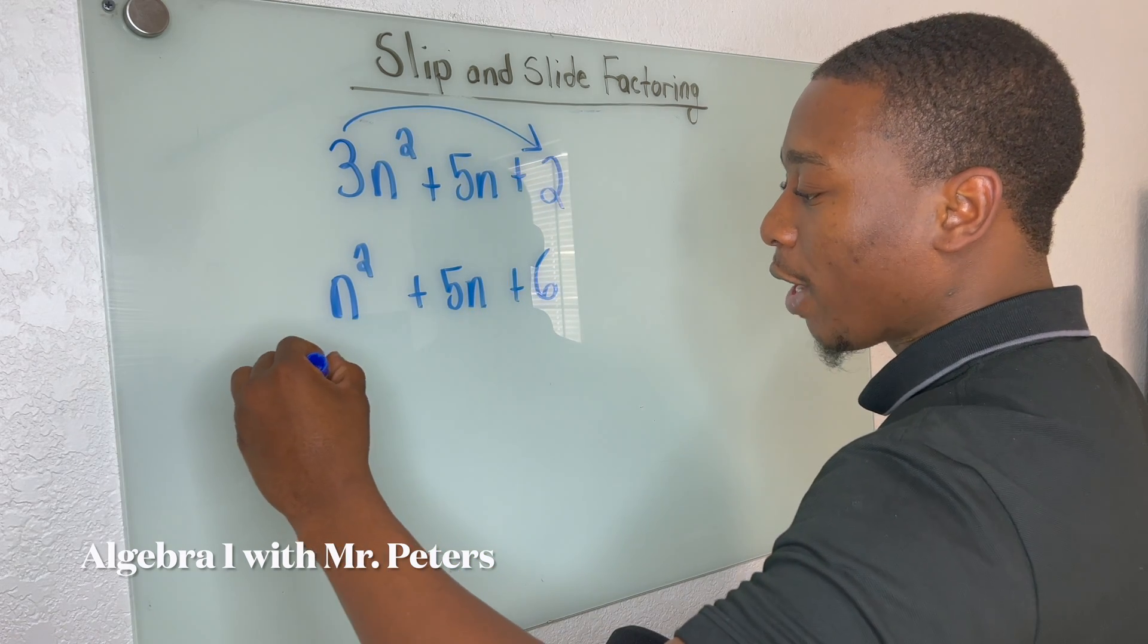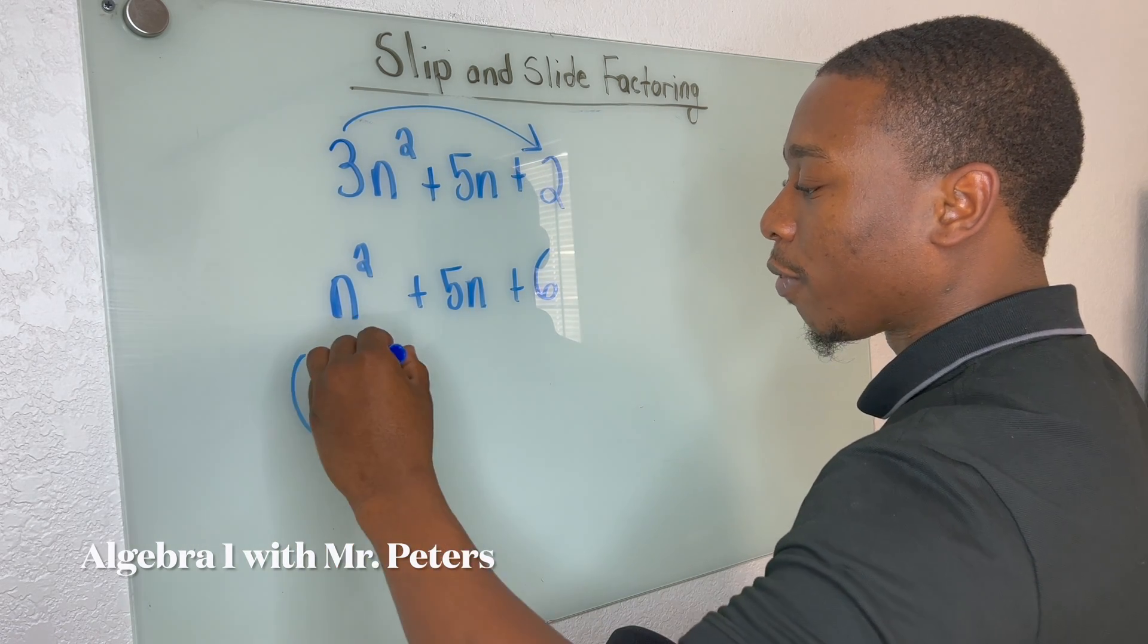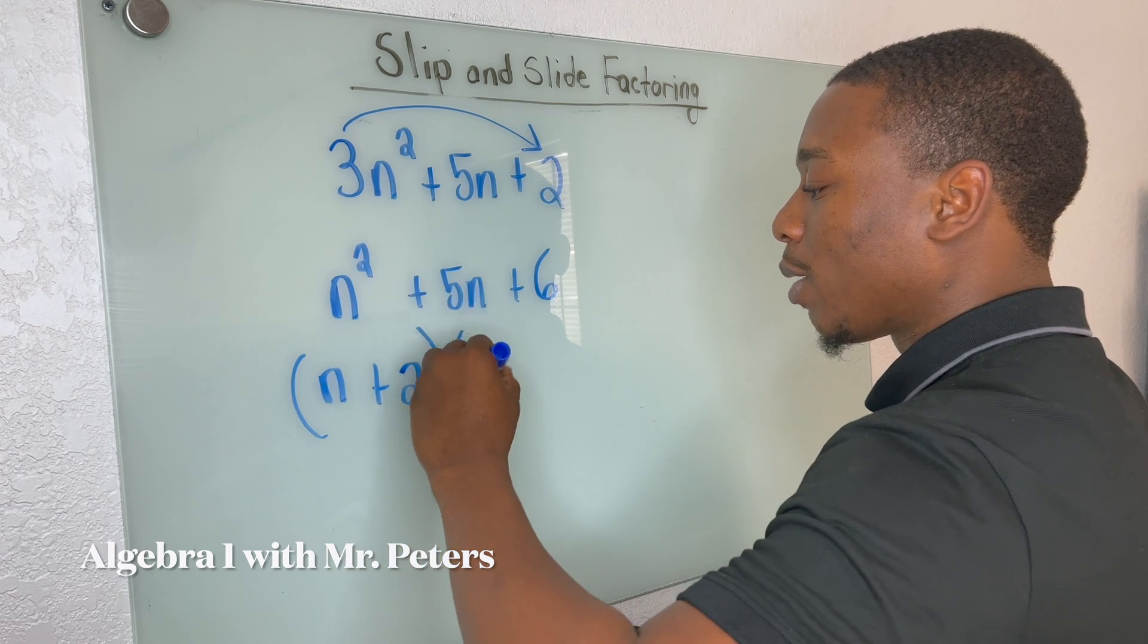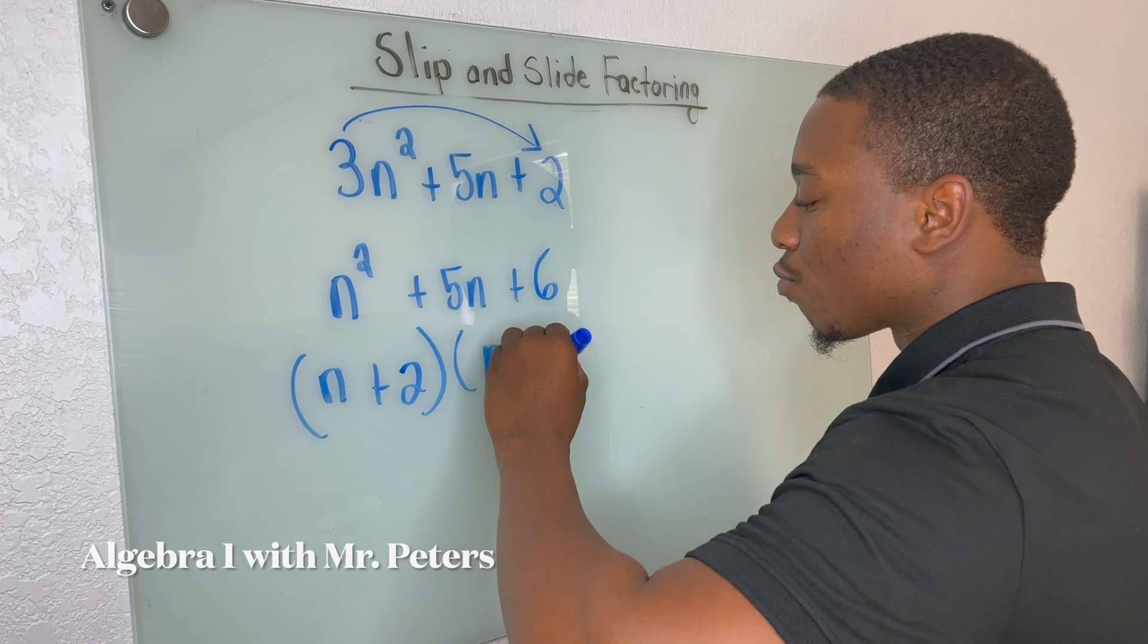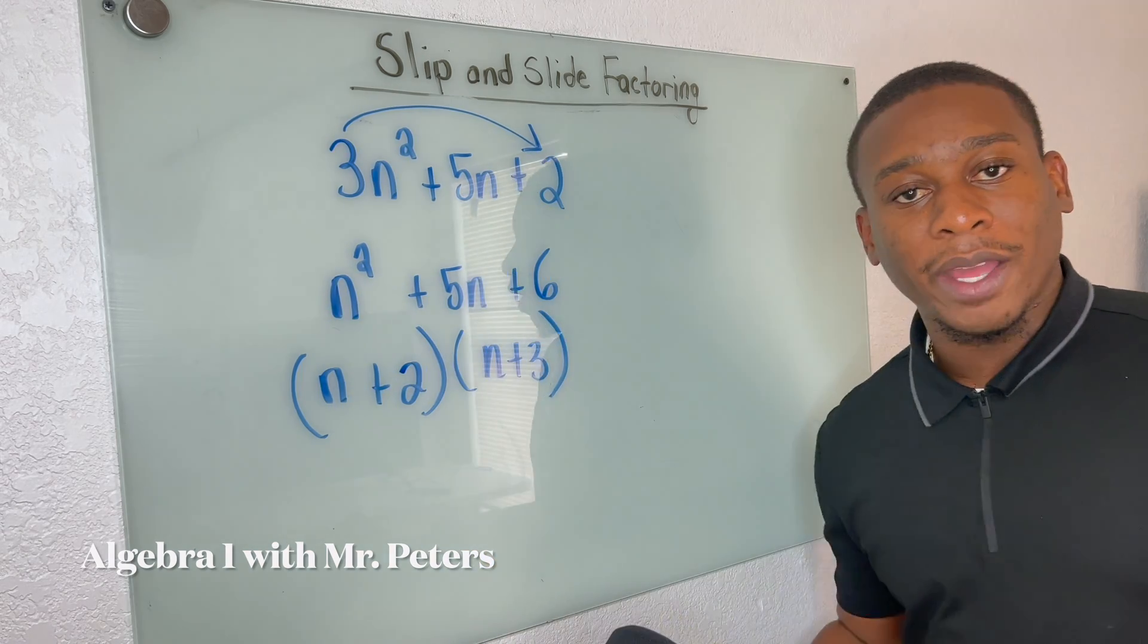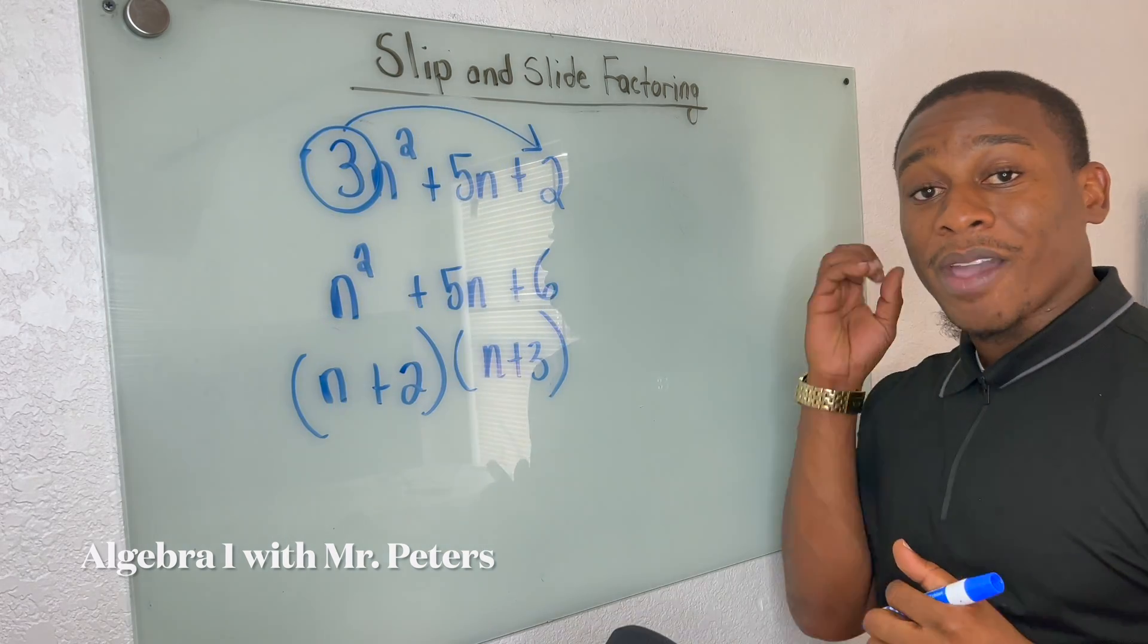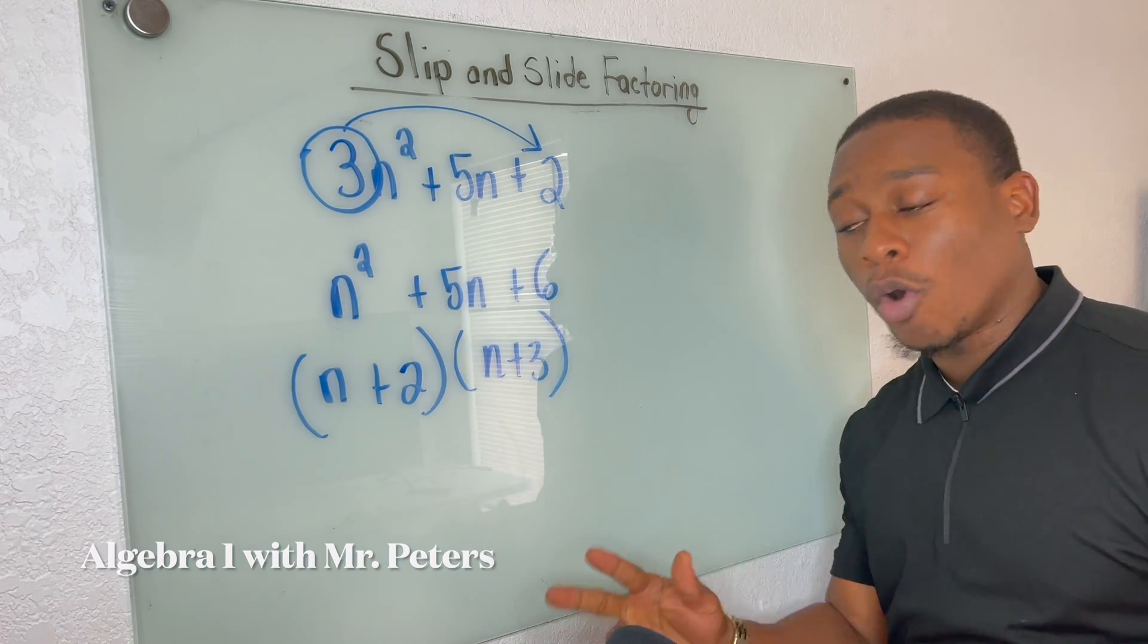So now we go through. We have N squared plus five N plus six. So for us to factor this now, we're going to have N plus two times N plus three. And at the last step, we just cannot forget to go back and divide by the same exact number we multiplied by.